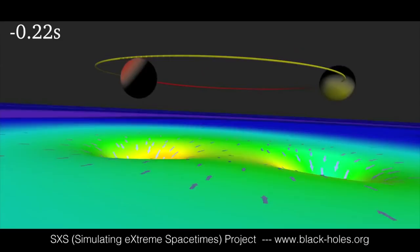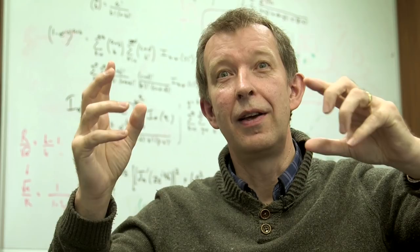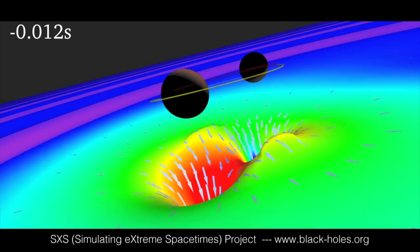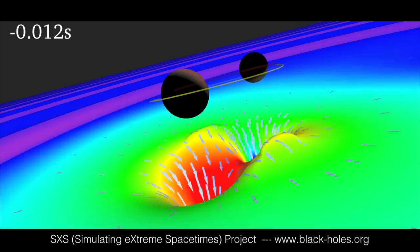They were doing this for millions and millions of years, and then in the final 0.2 of a second, as they came closer and closer together, they started going so rapidly around one another that they began to approach the speed of light — something like 60% of the speed of light. These are 30 solar mass black holes. When they were about 350 kilometres apart, they basically started merging together.